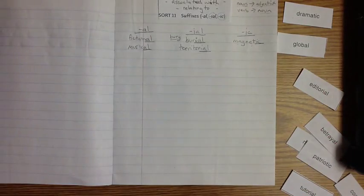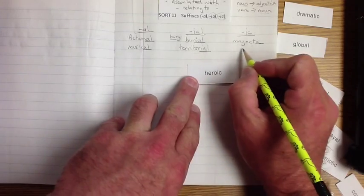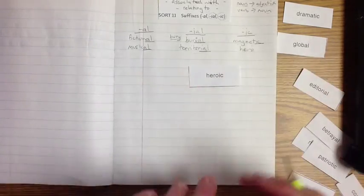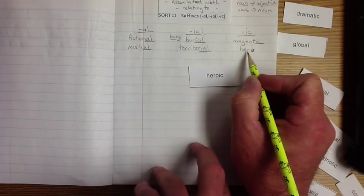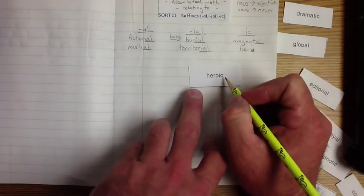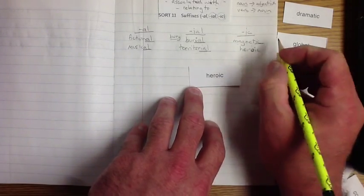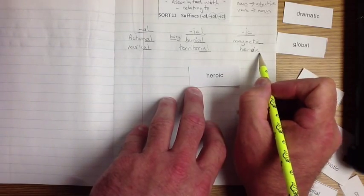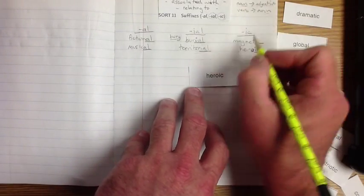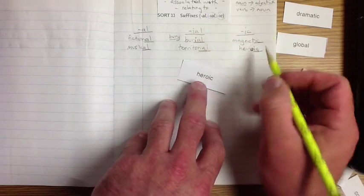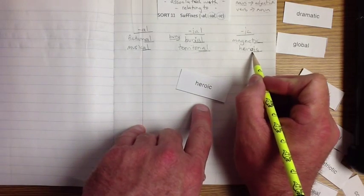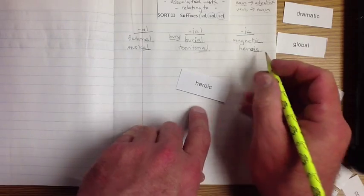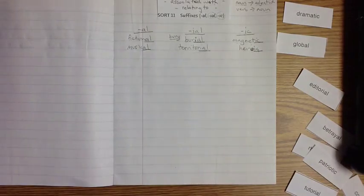We've been talking about heroes at school. When we're talking about hero, when you are a hero, you're a noun. When you are associated with heroes, that means you're doing something that a hero would do. So when you're heroic, you're doing something that is like a hero or relating to heroes.